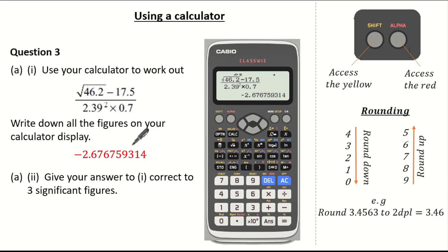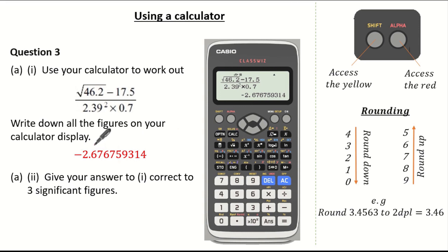Now the second part wants us to give our answer to three significant figures. So this is our first significant figure, second and third which is the 7. The 6 tells the 7 that we need to round up to give us minus 2.68.